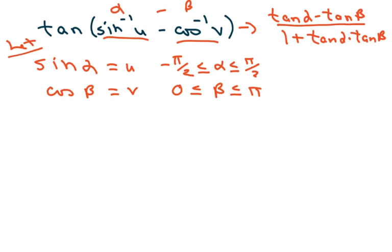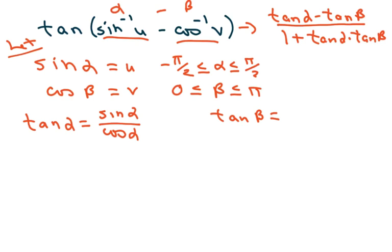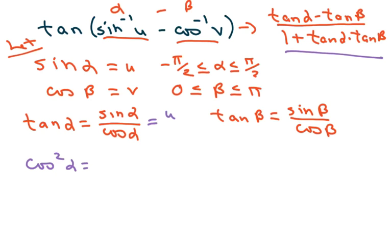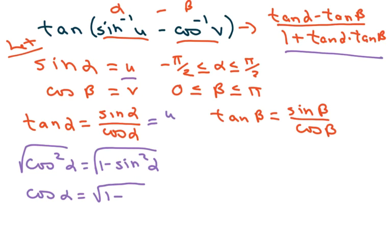We can find tan(α) as sine(α) over cosine(α). We already have sine(α) = u, so we need to find cosine(α). Using the identity cosine²(α) = 1 - sine²(α), taking the square root of both sides gives cosine(α) = √(1 - u²). Therefore, tan(α) = u over √(1 - u²).